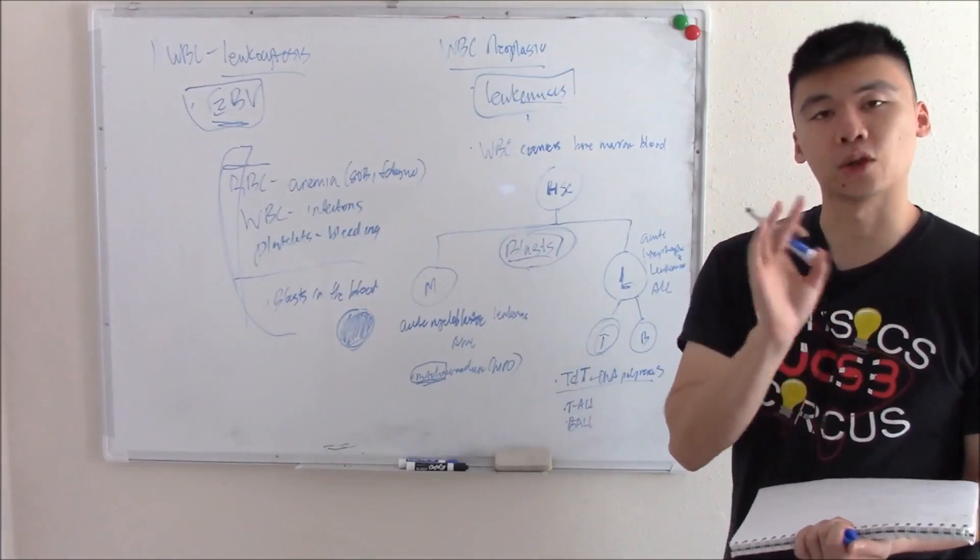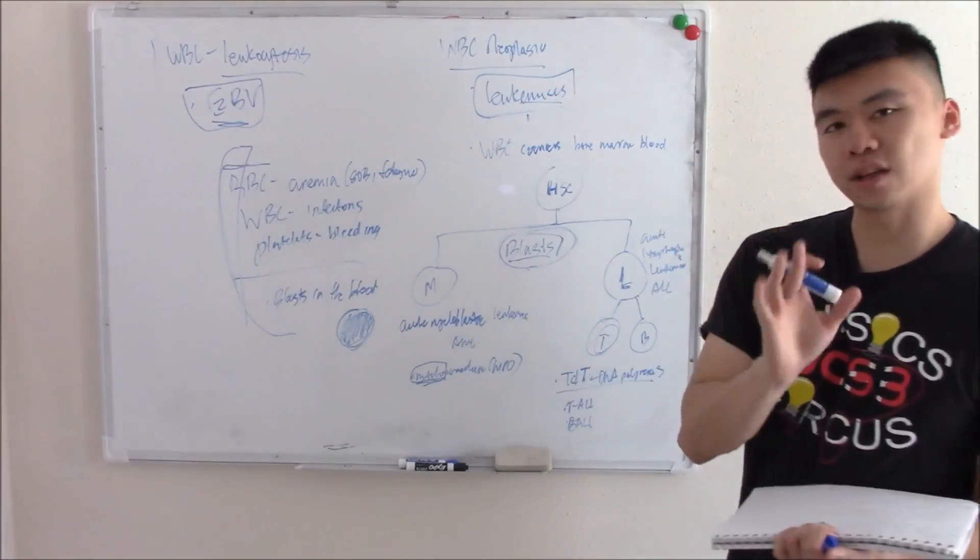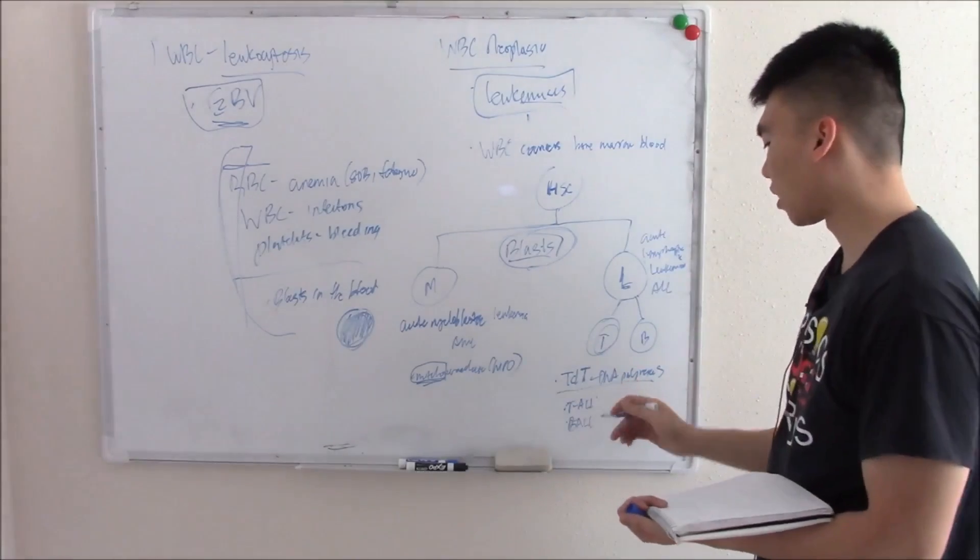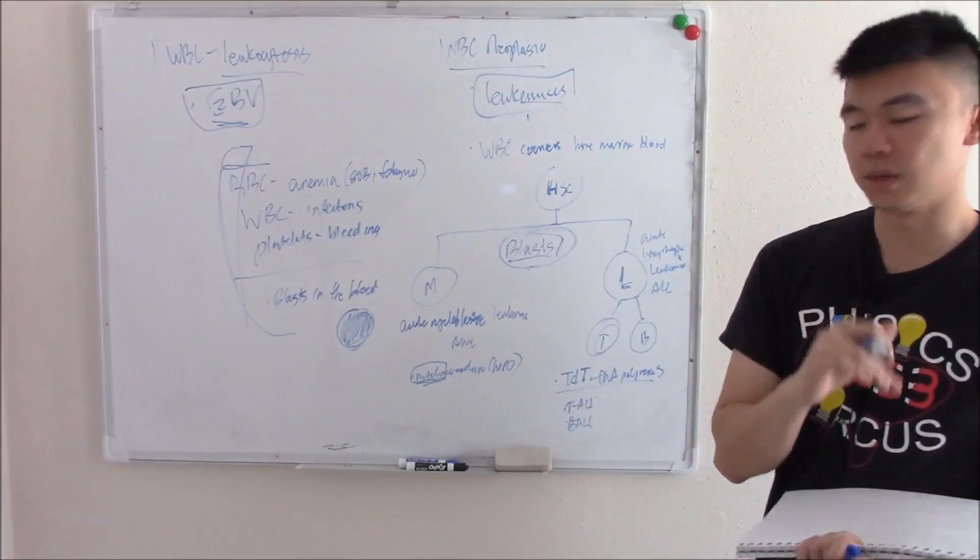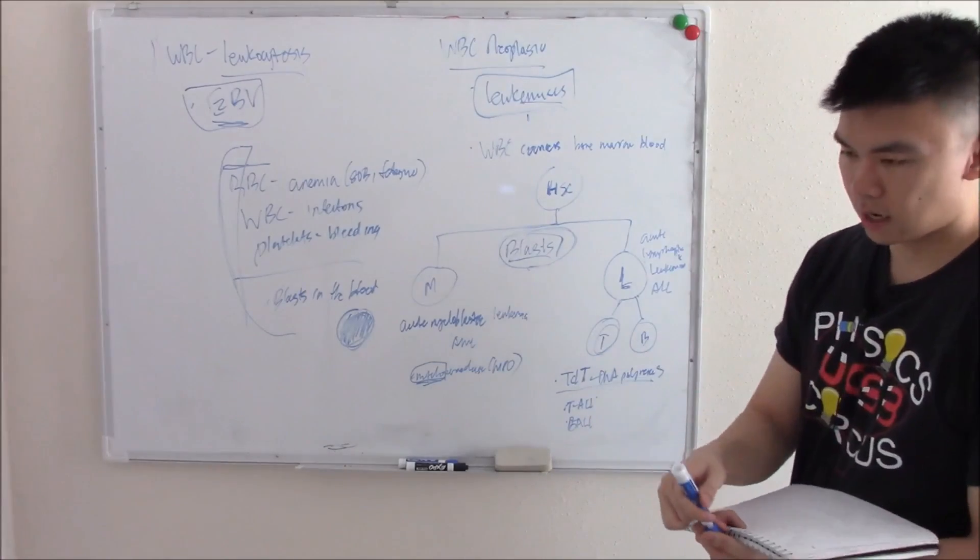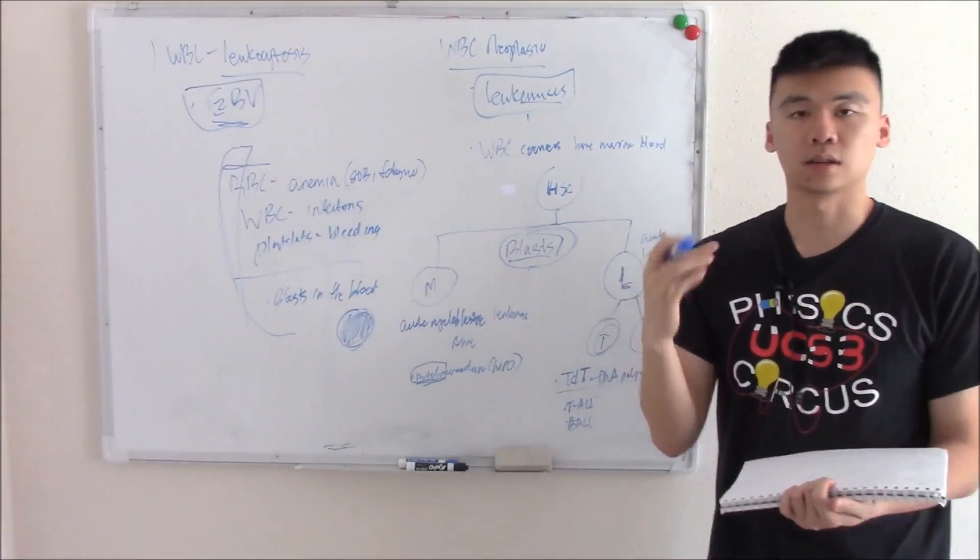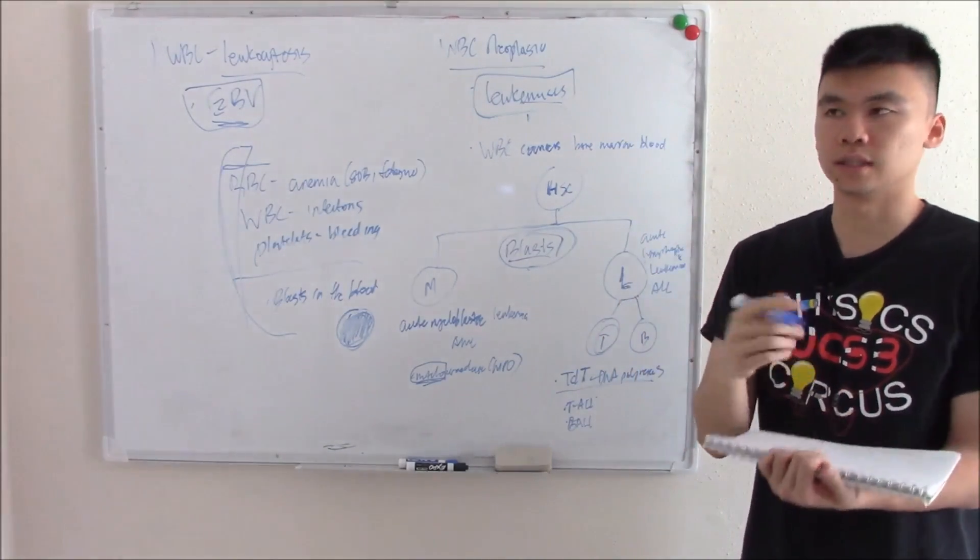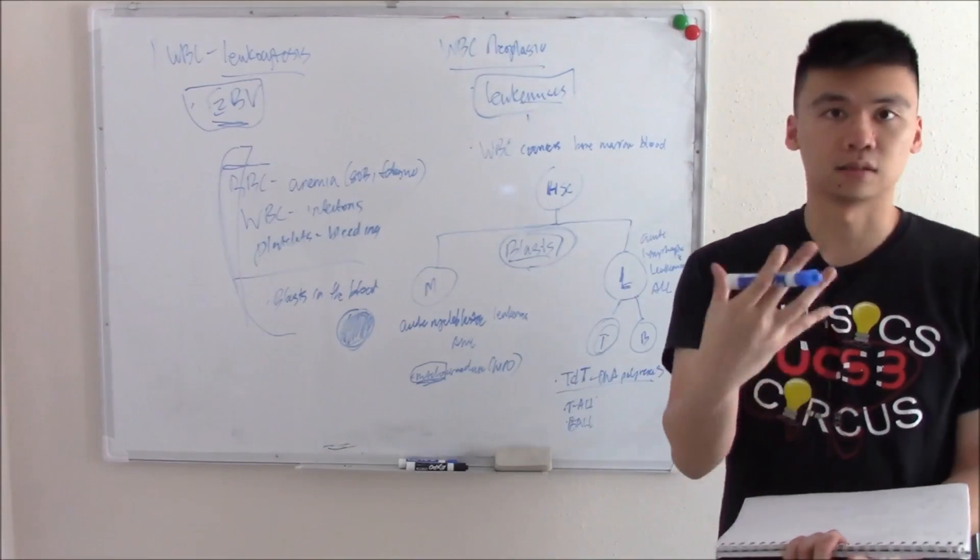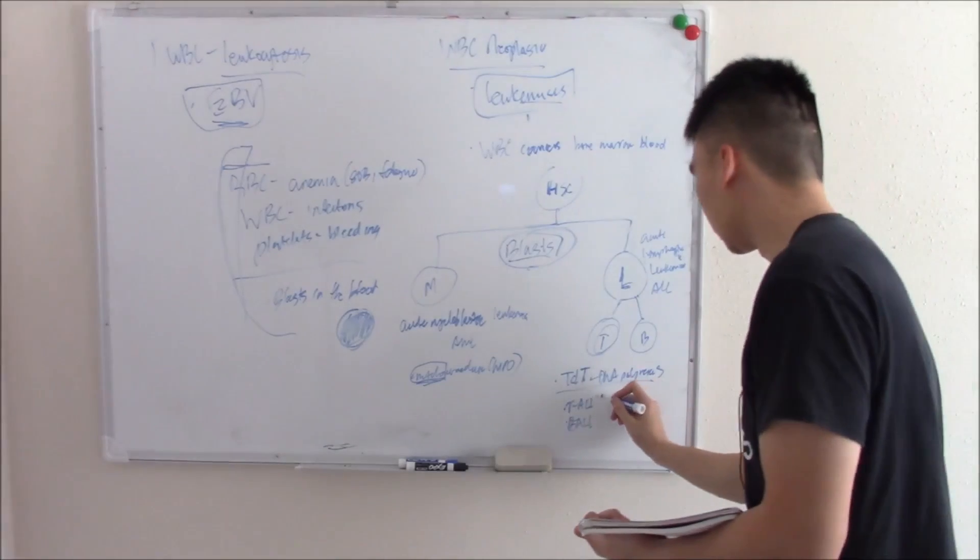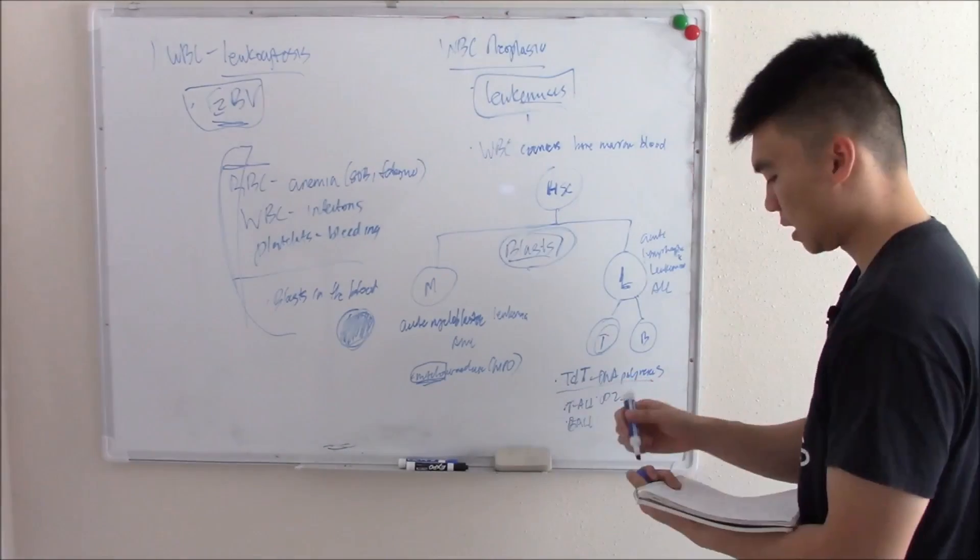We're going to look for markers. That's the name of the game for this video. We'll look for markers unique to T cells and markers unique to B cells. The markers unique to T cells are your CD markers: CD2, 3, 4, 8, seen in T cells like helper T cells and cytotoxic T cells. That's the lab finding.